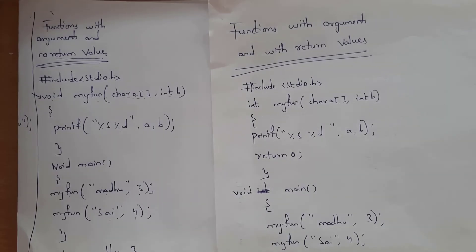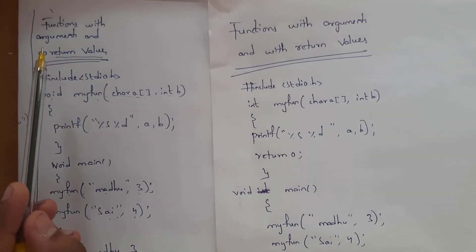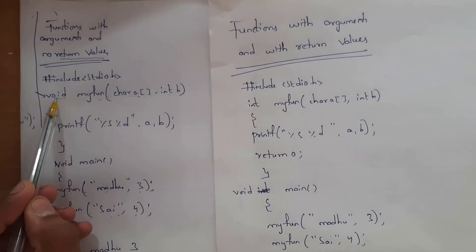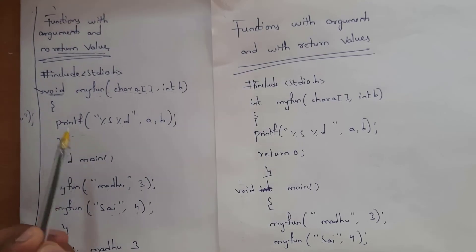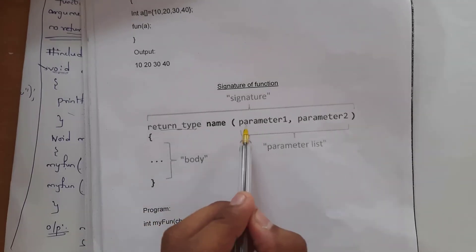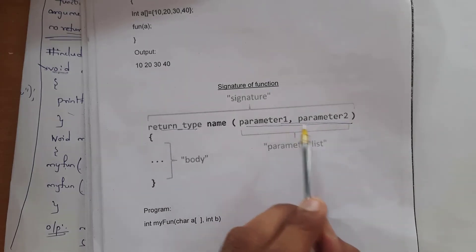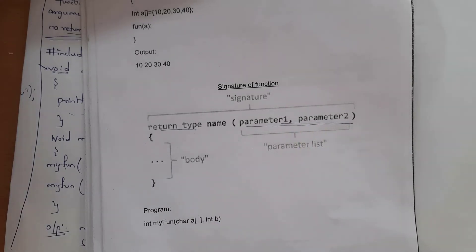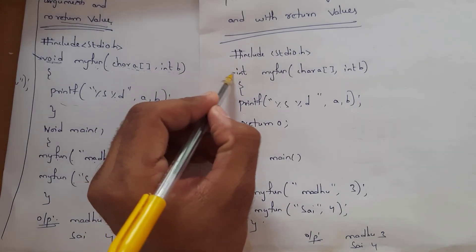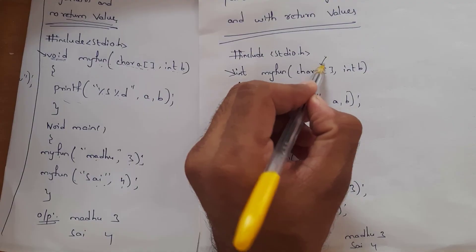The fourth type is function with arguments and with return value. This program is the same as the previous one, except replace void with int and add return 0 inside the function. A function that contains both a return type and parameters is called the signature of a function. When an exam question asks about function signature, write this syntax as your example.